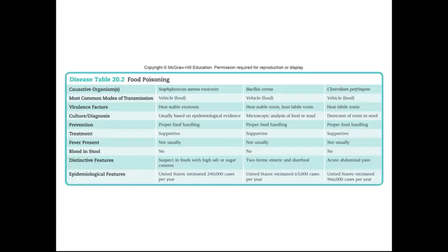Here's a table summarizing some common microbial sources of food poisoning. Staphylococcus aureus produces an exotoxin that is heat-stable. Bacillus cereus also produces a heat-stable toxin. This means that even if you cook the food to kill the bacterium, the toxin secreted by the bacterium will not be denatured and can still make you sick.